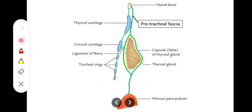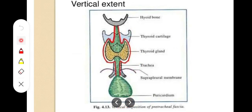In relation to the carotid sheath, the pre-tracheal fascia is anteriorly present, and in relation to the sternocleidomastoid muscle, it is posteriorly present. The posterior aspect of the gland is merged with the inferior thyroid vein, passing behind the brachiocephalic vein, and blending with the fibrous pericardium and the arch of aorta.